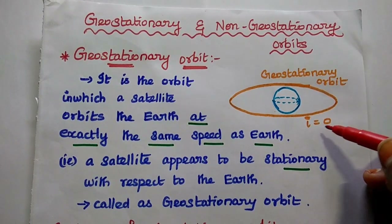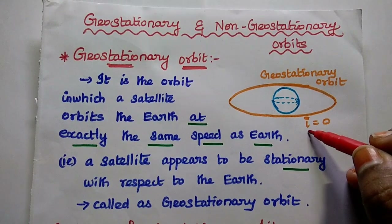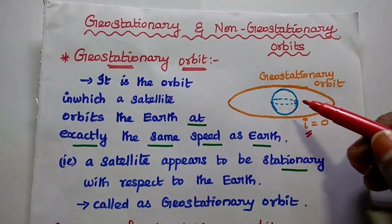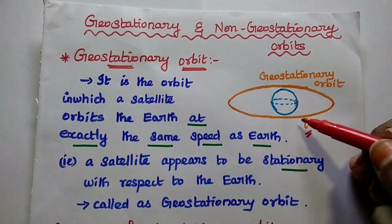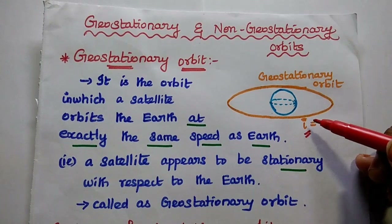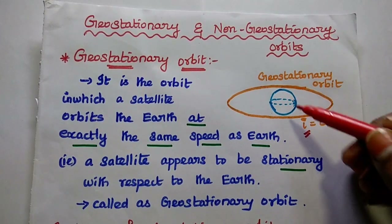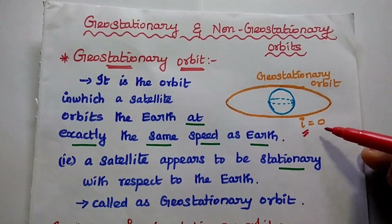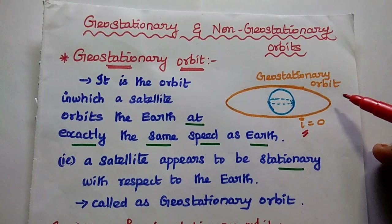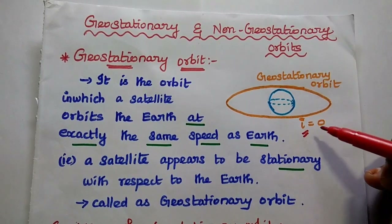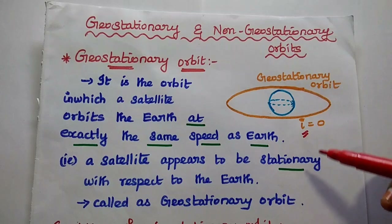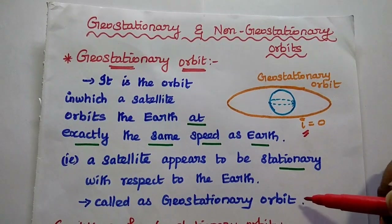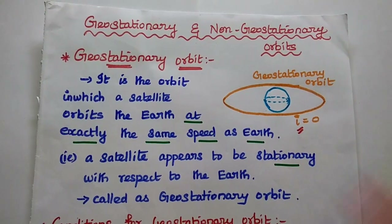Here I is equal to 0, where I means the inclination angle between the equatorial plane and the satellite orbital plane. Both are in the same plane, hence I is equal to 0 for geostationary orbit. Since the satellite appears as stationary, it is called a geostationary orbit.